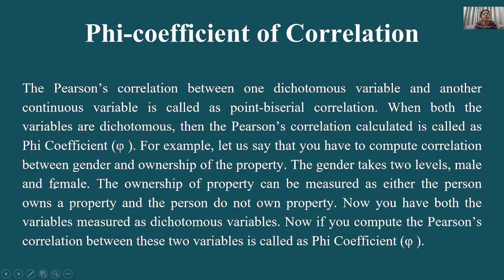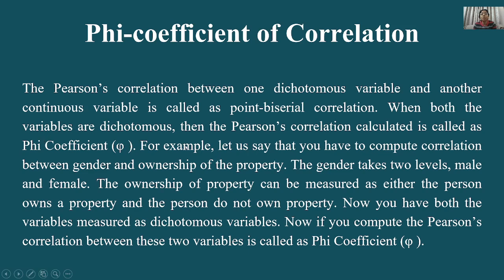Pearson's correlation between one dichotomous variable and another continuous variable is called point biserial correlation. Pearson का जो biserial और point biserial है वो Pearson के ही special forms हैं। जब एक dichotomous हो और दूसरा continuous हो तो point biserial लगाते हैं। When both variables are dichotomous, then phi लगाएंगे।